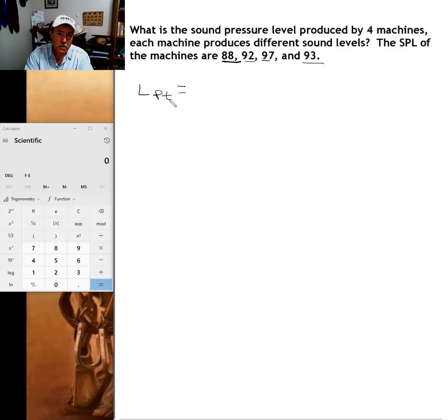But let me go ahead and start with the formula that we're going to be using: L sub PT, that's what we're calculating, the total pressure level of these four machines. 10 log, and we're going to be taking the logarithm of everything that's going to end up in this bracket. And here is a new symbol that you may not be familiar with, like a backwards E, but it's a summation operator.